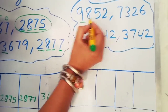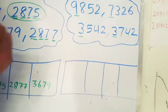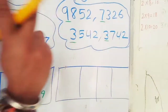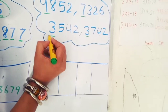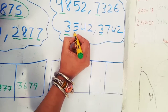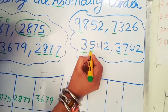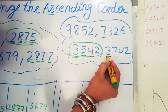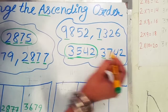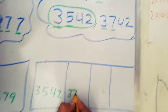Now see the next sum. You can see numbers here. First of all we check thousands: nine, seven, three, three. The smallest numbers are three and three. Now we check the hundreds: five and seven. The smallest is five, so three thousand five hundred forty-two is smaller than three thousand seven hundred forty-two. Write down three thousand five hundred forty-two first, then three thousand seven hundred forty-two.